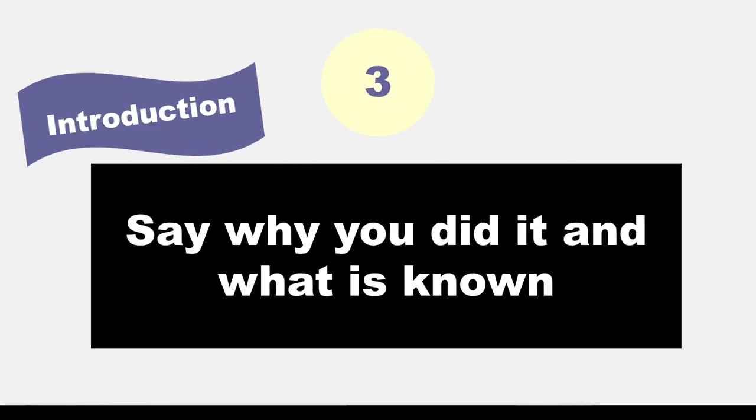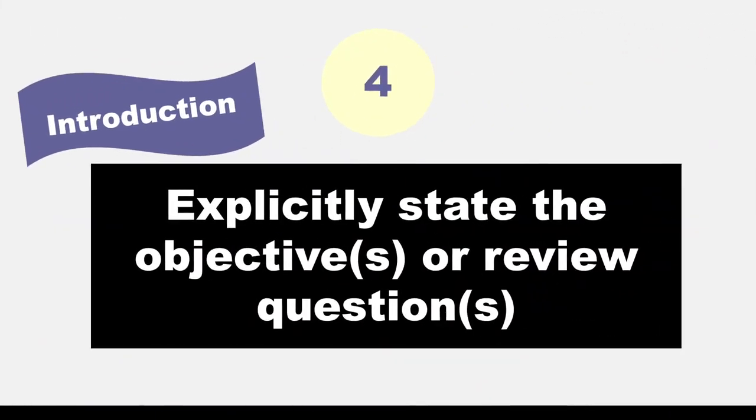The third item asks that you describe the rationale for the review in the context of existing knowledge. For this, you may have to provide some background information. The next item is number four, to provide an explicit statement of the objective or question that the review addresses. Again, this helps provide clarity for the reader.